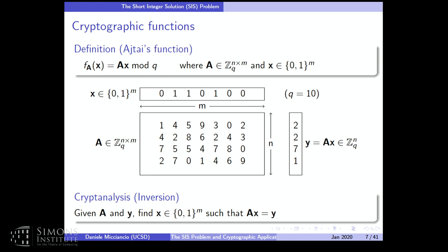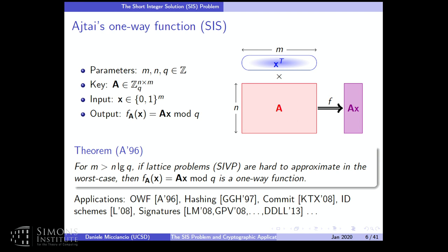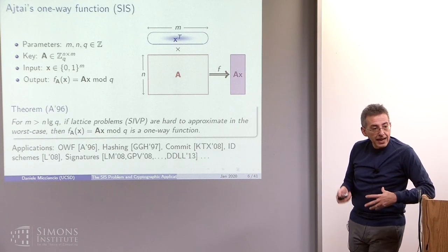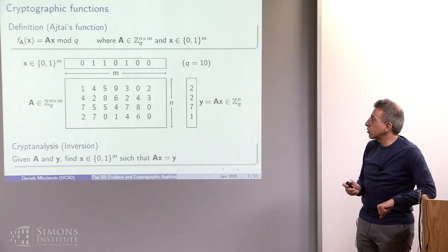Inverting the function is exactly the cryptanalysis problem corresponding to inverting this as a one-way function. The function is not only one-way — it is also hard to find collisions. Even if we restrict the domain to binary vectors, if m is bigger than n log q, then the set of binary vectors you can pass as input is bigger than the set of possible outputs. So you have q^n possible outputs and 2^m possible inputs, meaning this function is never injective — it has collisions — but those collisions are hard to find.